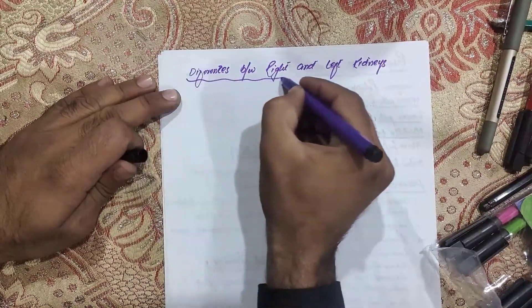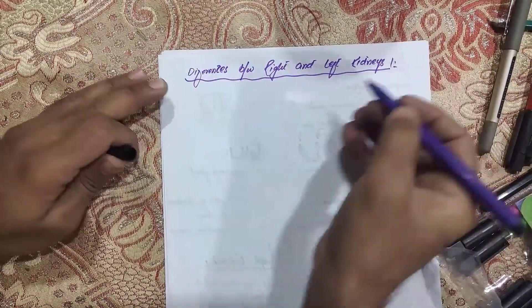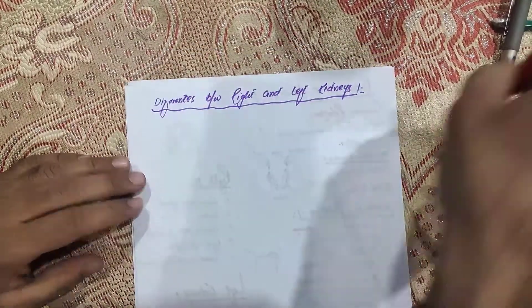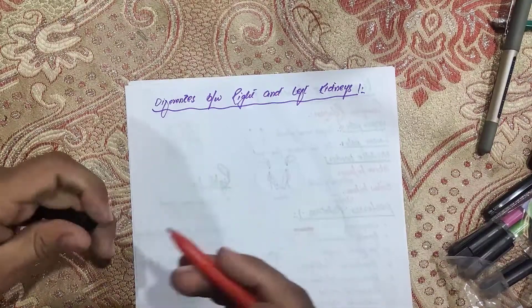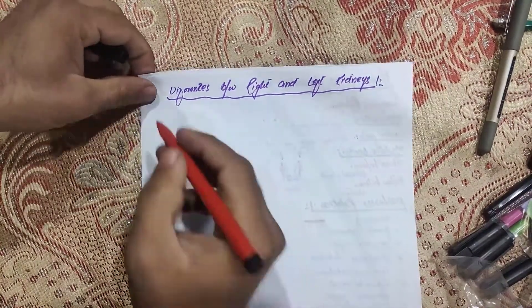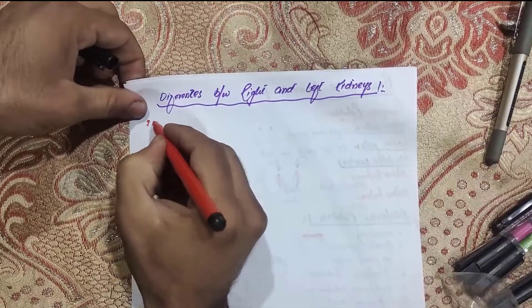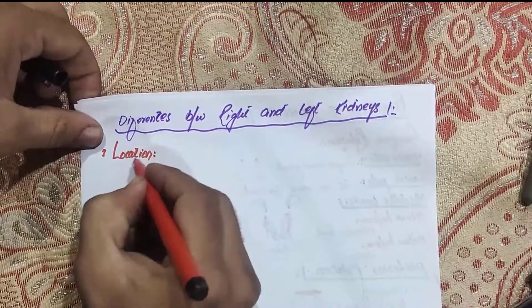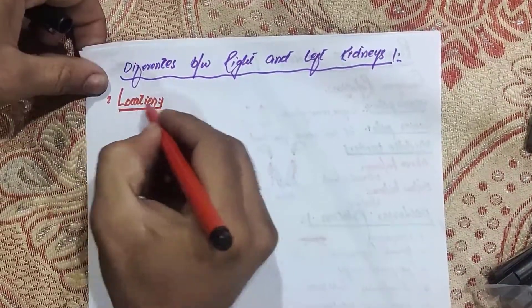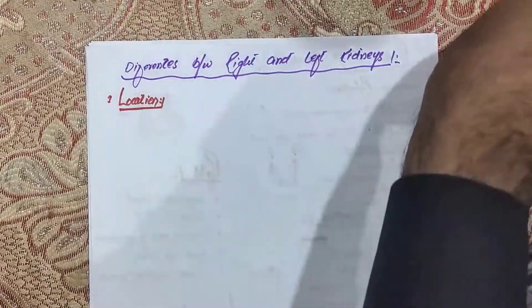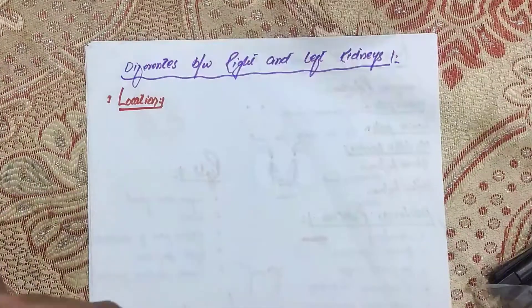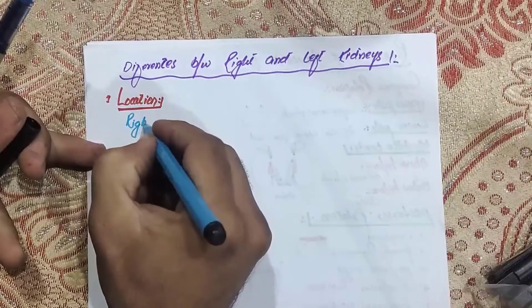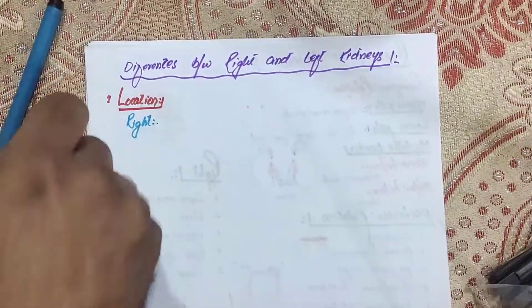Both kidneys have lots of differences as well as lots of common relations. The first difference we should discuss is about the location of the right and left kidney. There is a little bit of difference in the location of both kidneys.